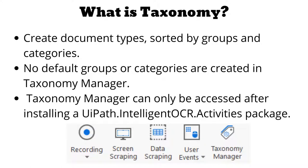For example, we have a group named Bill. In that Bill, there can be different categories like Gas Bill, Electricity Bill, and Water Bill. These are three different categories under the group Bill. Each of these categories, or each of these types of documents, can have their own document type or own fields which we want to extract.